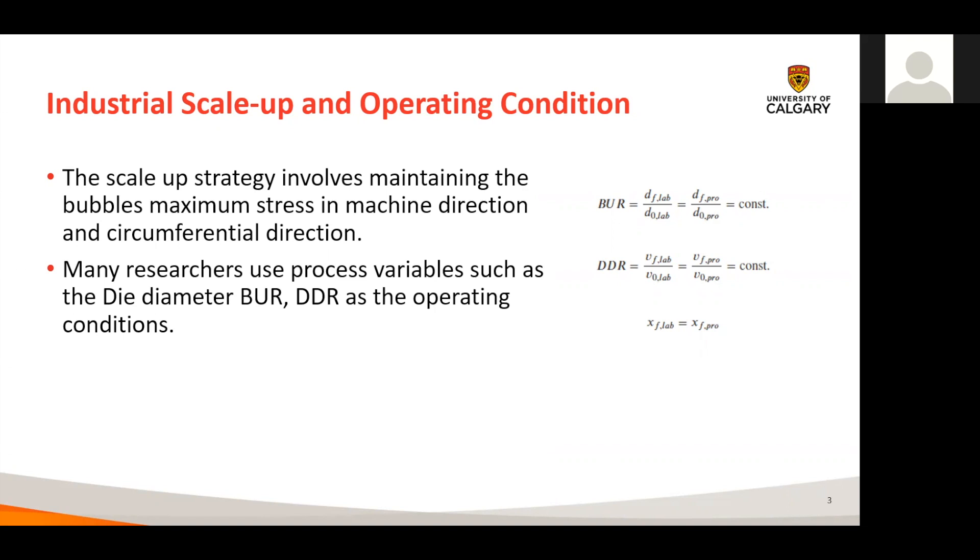In detail, the primary strategy is to keep the bubble's maximum stress in the machine direction and the circumferential direction identical between the lab condition and the industrial condition. To describe it in a formal mathematical scale up strategy, a geometrical similarity between the two differently scaled processes must be achieved and the three requirements shown must be met.